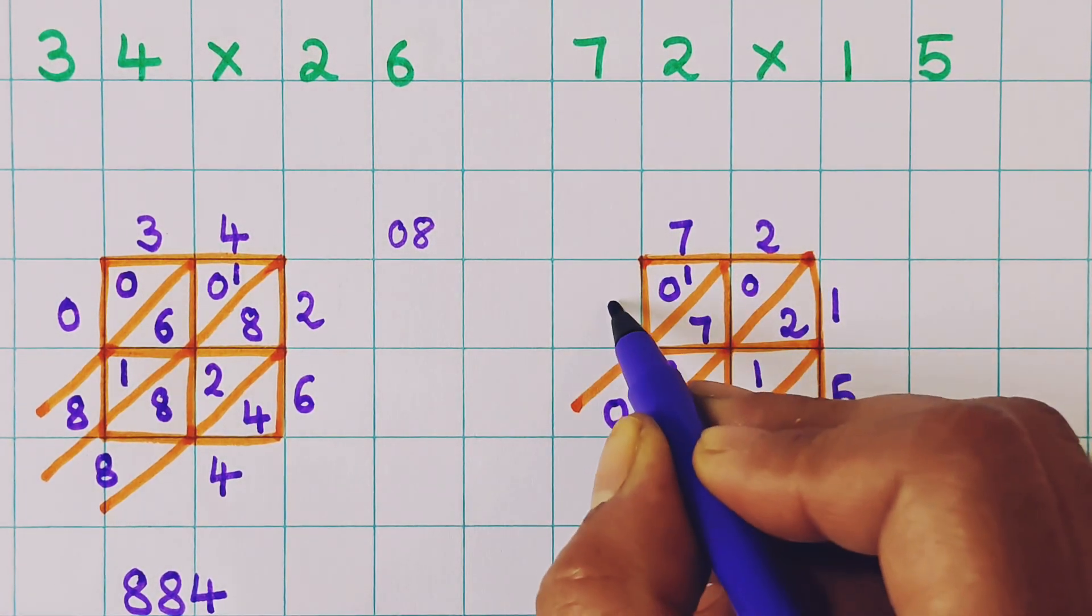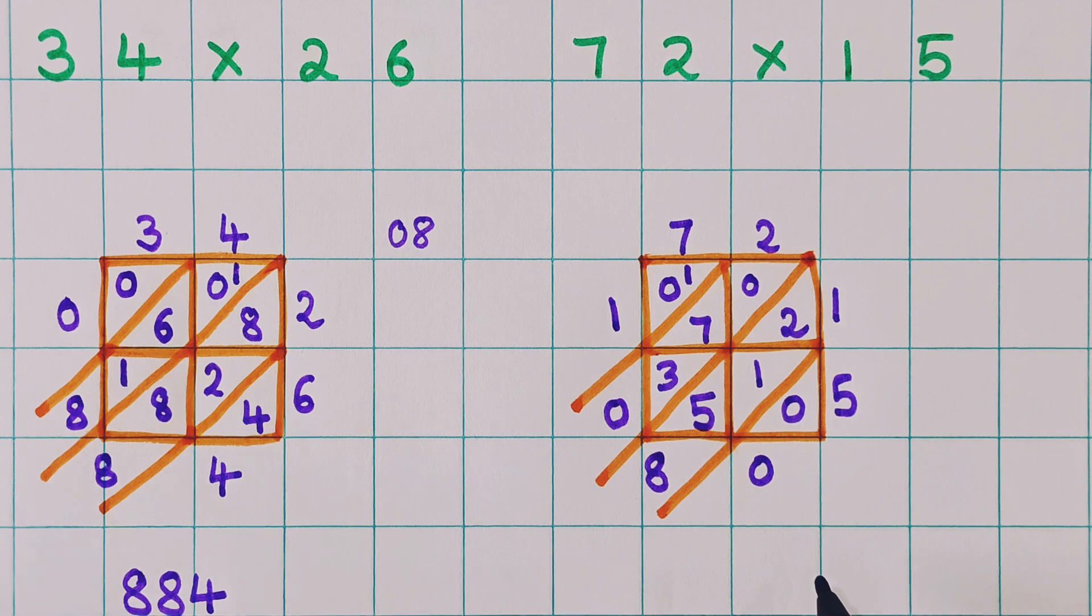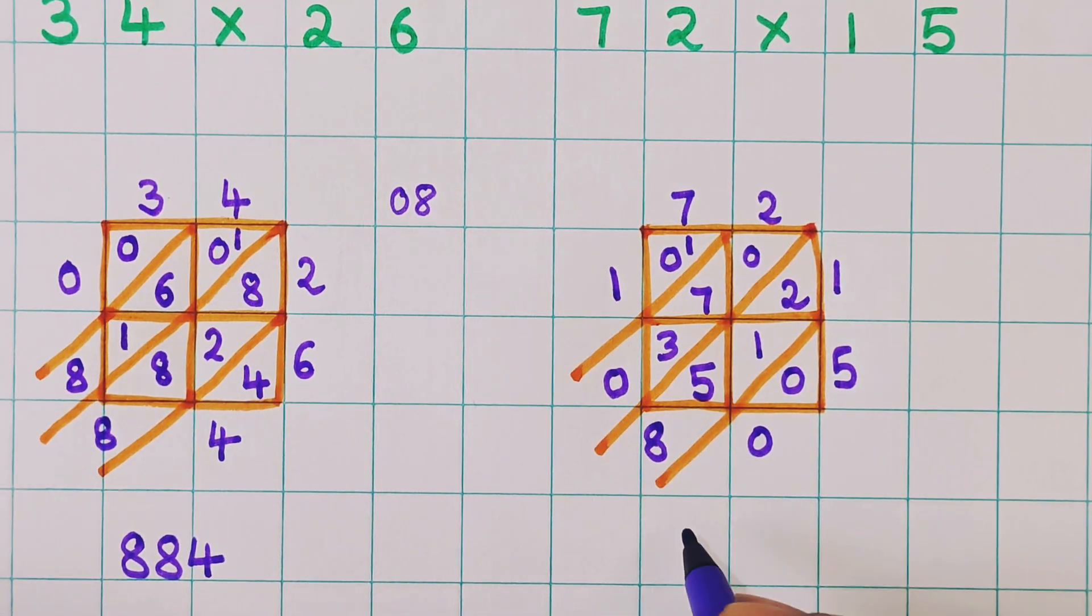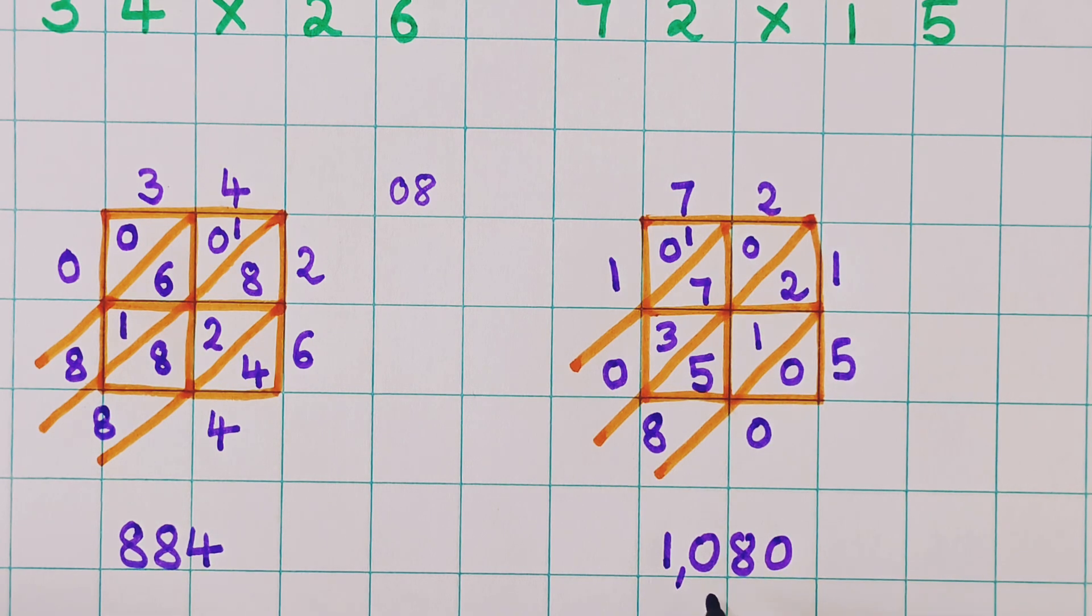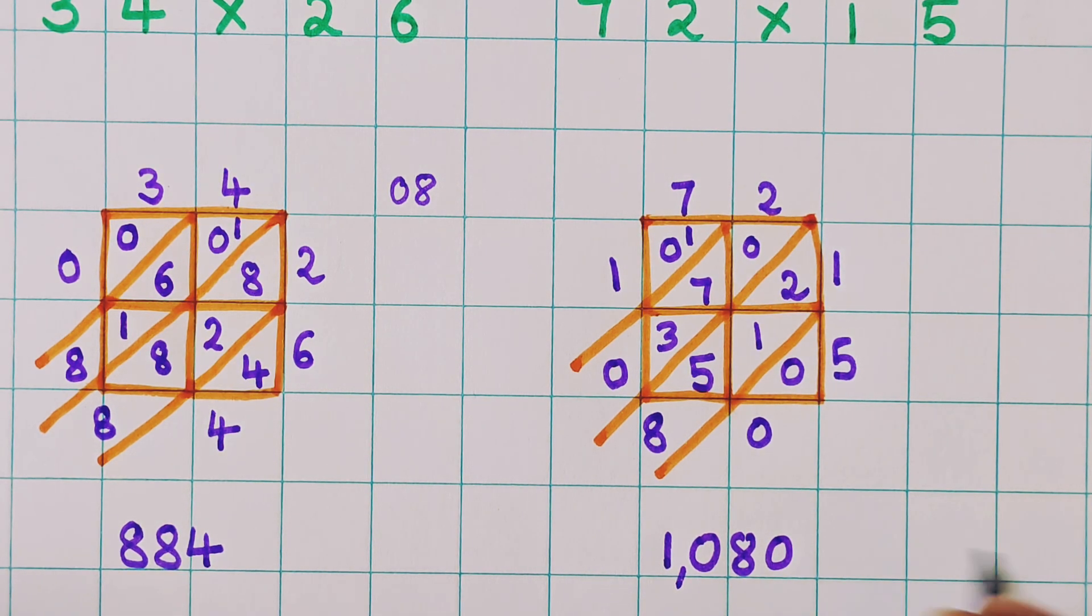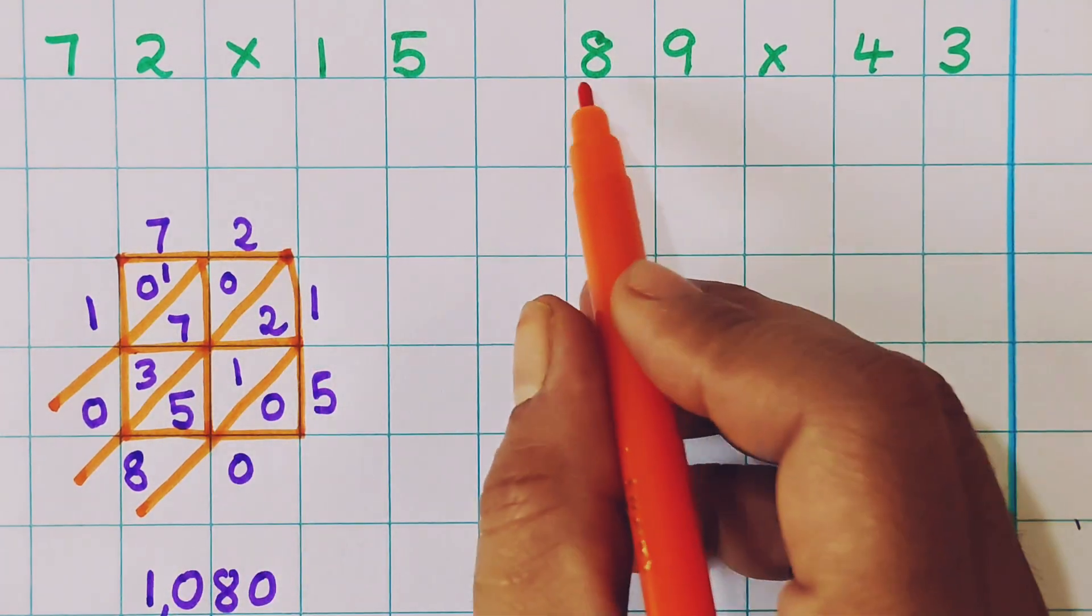1 plus 0, 1. So now what is the answer? 1, 0, 8, 0. So the answer is 1080. Now let's do the next problem.